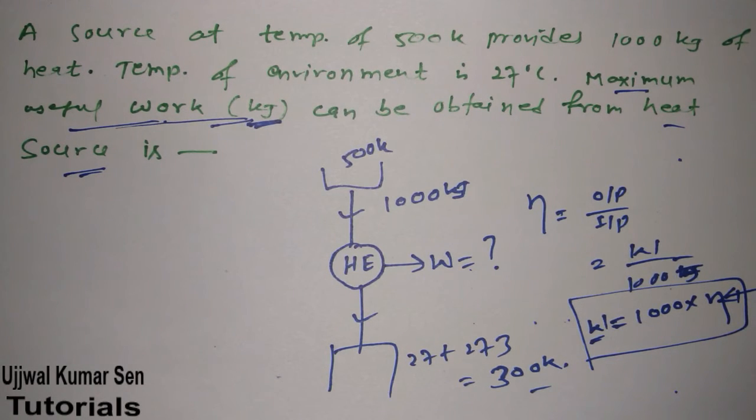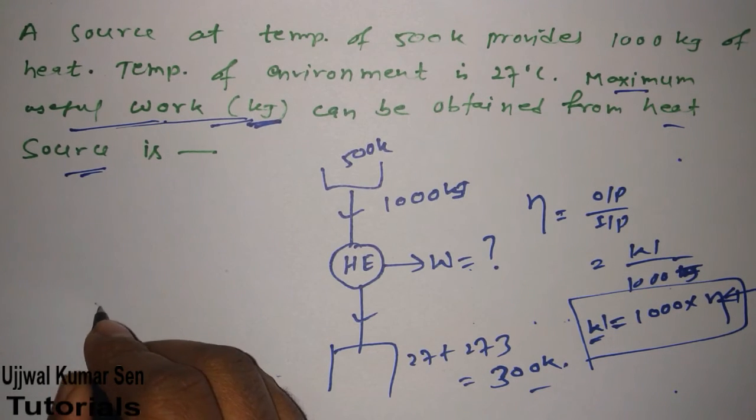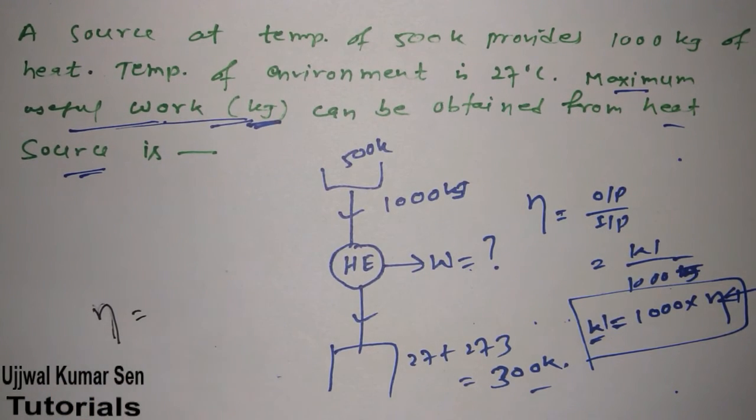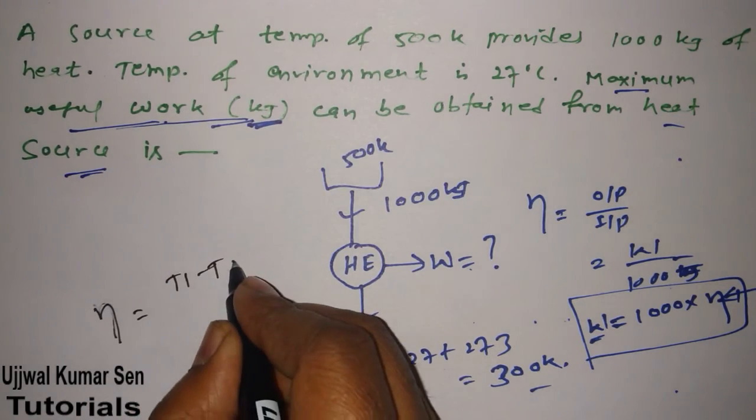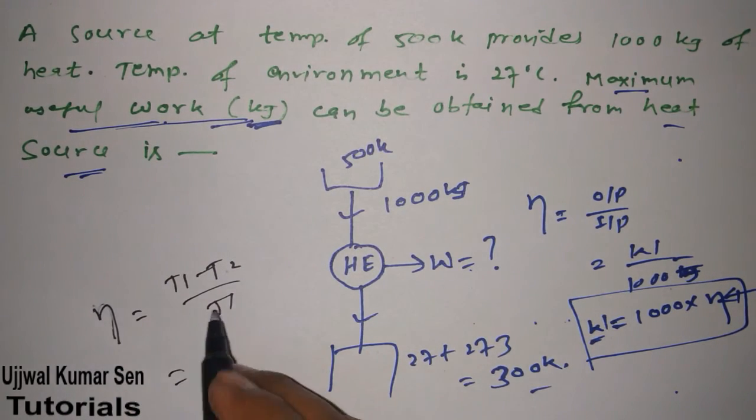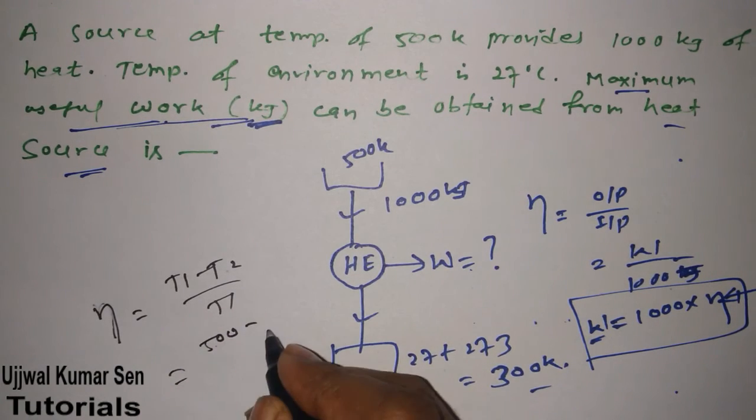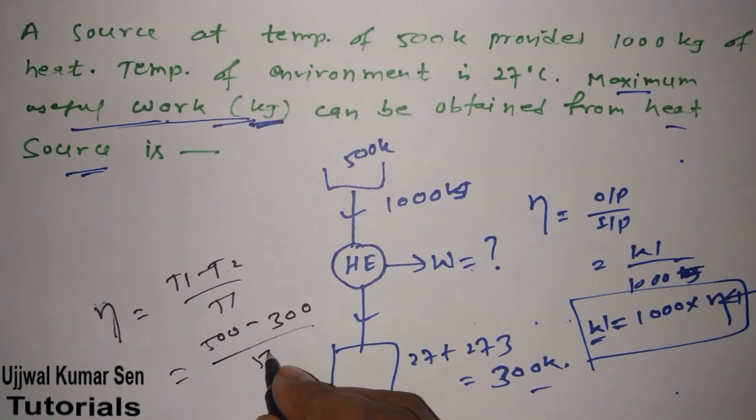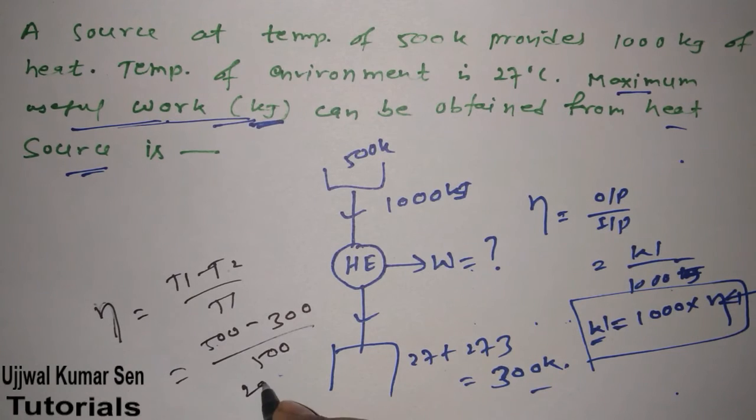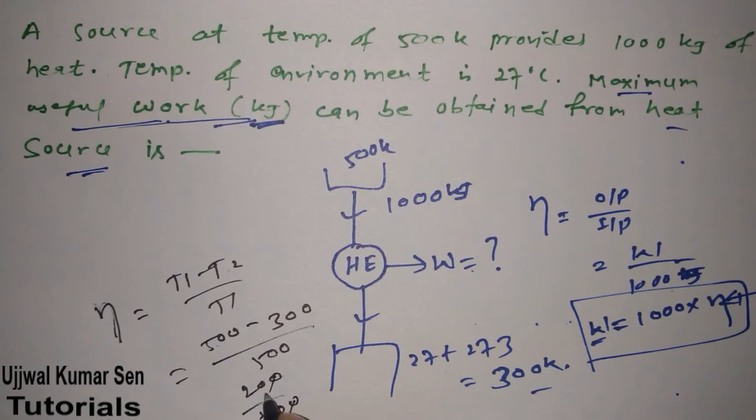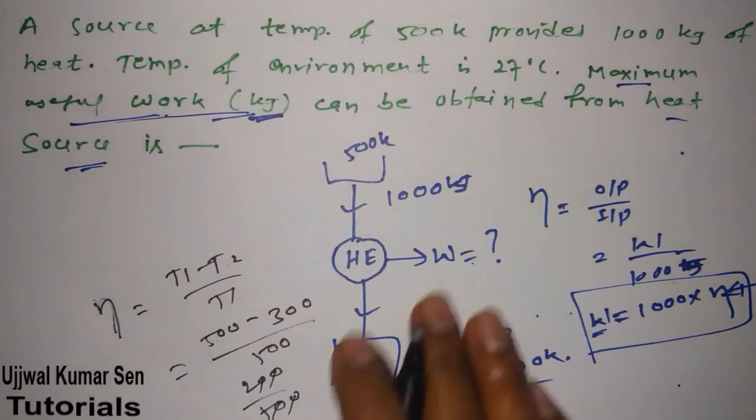We know the formula for efficiency in terms of temperature: η = (T₁ - T₂)/T₁. So T₁ is 500 minus T₂ is 300, divided by 500.